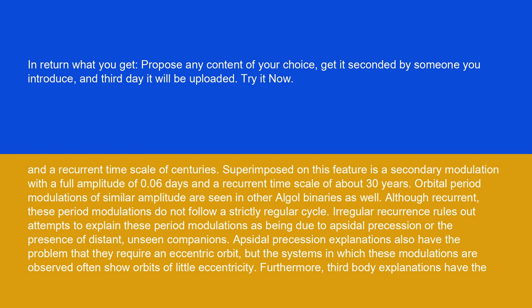Irregular recurrence rules out attempts to explain these period modulations as being due to apsidal precession or the presence of distant, unseen companions. Apsidal precession explanations also have the problem that they require an eccentric orbit, but the systems in which these modulations are observed often show orbits of little eccentricity.